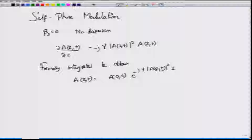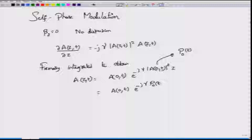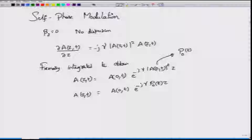Remember we have chosen the units of the pulse envelope A such that its magnitude squared represents the optical power. So this is the optical power at z equal to 0, which describes how the phase term is changing. You now have A(0,t) times e to the power minus j gamma P0(t) times z. A complex phase factor e to the power minus j times gamma P(0,t) times z is multiplying the envelope.